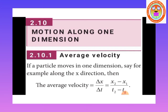Δx is the change in the x axis, and the average velocity equals Δx divided by Δt. Δx means the difference between the initial position and the final position, that is x2 minus x1. Δt is the change in time — the difference between the initial time and the final time, that is t2 minus t1.